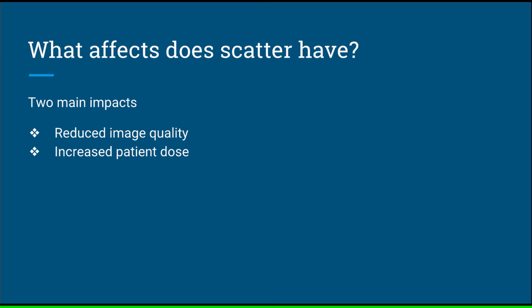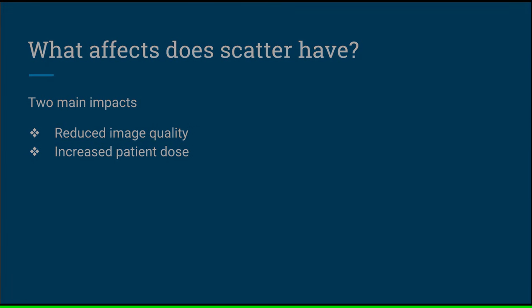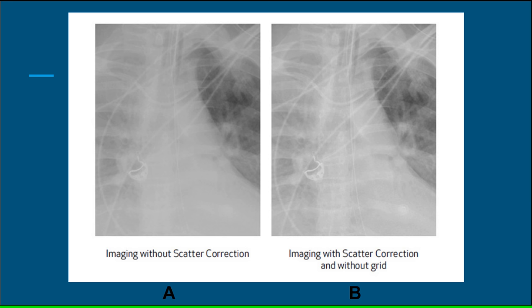What effects does scatter have? Image quality is reduced when there is an increase in scatter, typically caused by a higher KVP technique. Compton scatter has no useful information on a radiograph and results in reduced image contrast. When scatter is increased, there is a direct increase in patient dose. Increased scatter ultimately results in image noise and a general dulling of the image. Image A has a duller appearance compared to image B. Focus your attention on the ribs — the ribs on image B are more pronounced than can be seen on image A.